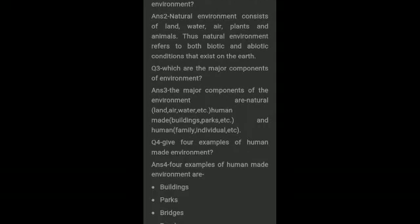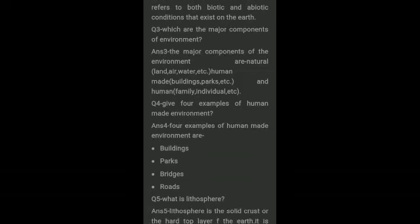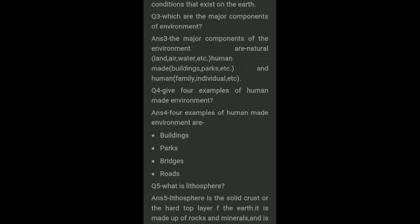Moving towards your third question: which are the major components of environment? The major components of environment are: natural (land, air, water, etc.), human-made (buildings, parks, etc.), and human (family, individual, etc.).